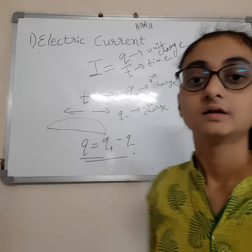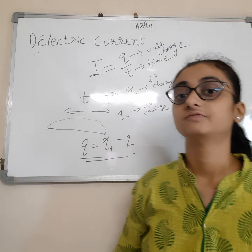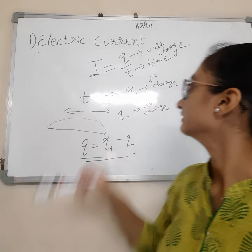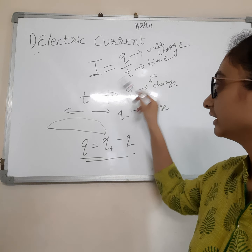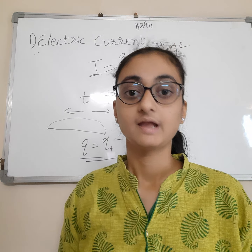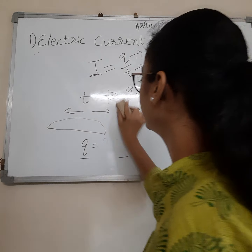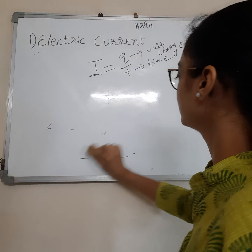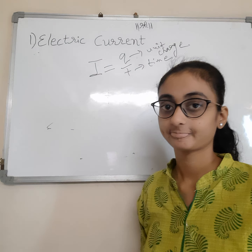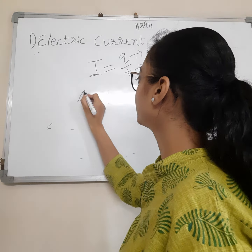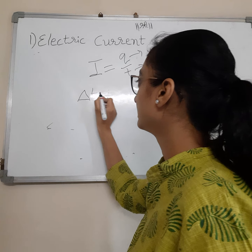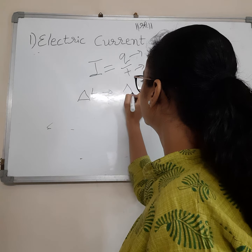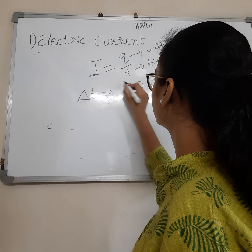if we take Q plus for positive charge and Q minus for negative charge, and we see both directions — forward direction and backward direction — then if we take only the forward direction, the charge Q will be Q plus minus Q minus.